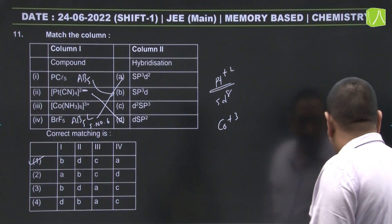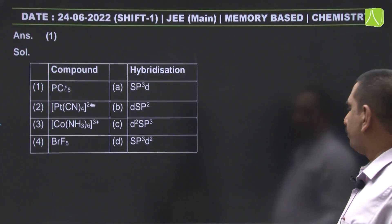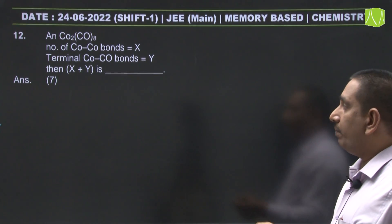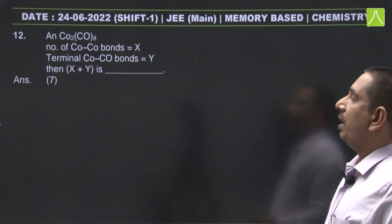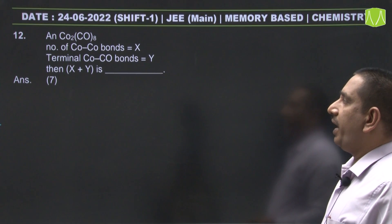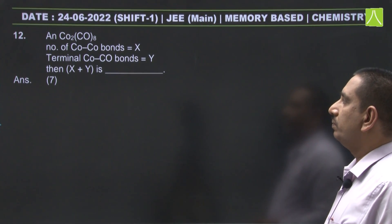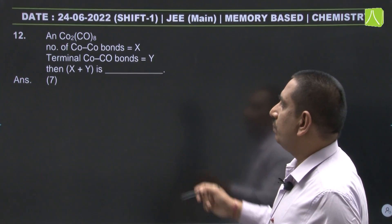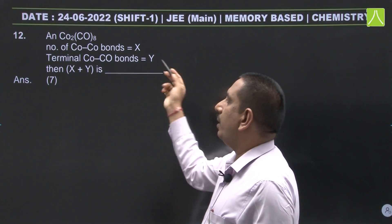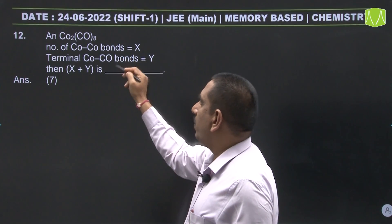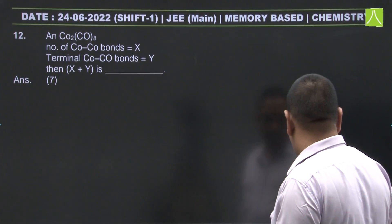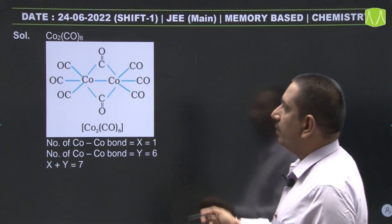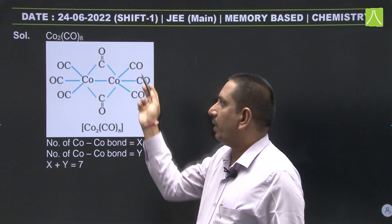Next: d²sp³ hybridization. For Co2(CO)8, the number of Co–Co bonds and terminal cobalt carbonyl bonds are given as x and y respectively, and we need to find x + y. In this complex, there is 1 Co–Co bond.